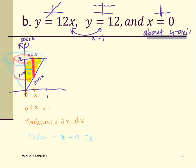And then the height of the bar. The height is the difference of the top graph and the bottom graph. The top graph is 12, the bottom graph is 12x. Top minus bottom, we get everything.